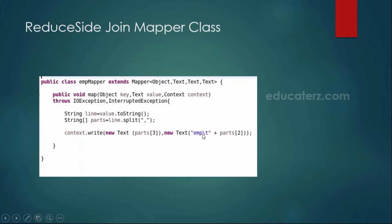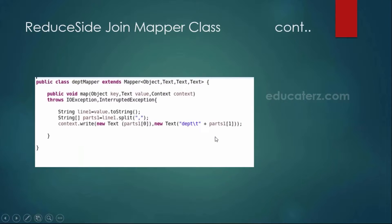Similarly for the department mapper, the content is separated with a comma. Part[0] is the department ID, which is the primary key, and part[1] is the department name. Here also, to uniquely identify the value, we are adding the DEPT tag.